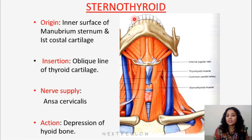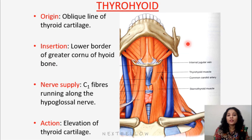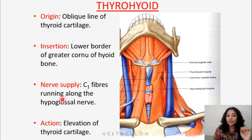Sternothyroid is the second-layer muscle. It originates from the inner surface of the manubrium (upper part of the sternum) and inserts into the oblique line of the thyroid cartilage. It is supplied by ansa cervicalis and causes depression of the thyroid cartilage. Thyrohyoid runs from the oblique line of the thyroid cartilage to the hyoid bone. Its nerve supply is different — it is supplied by C1 fibers running along the hypoglossal nerve. Its action is elevation of the thyroid cartilage.